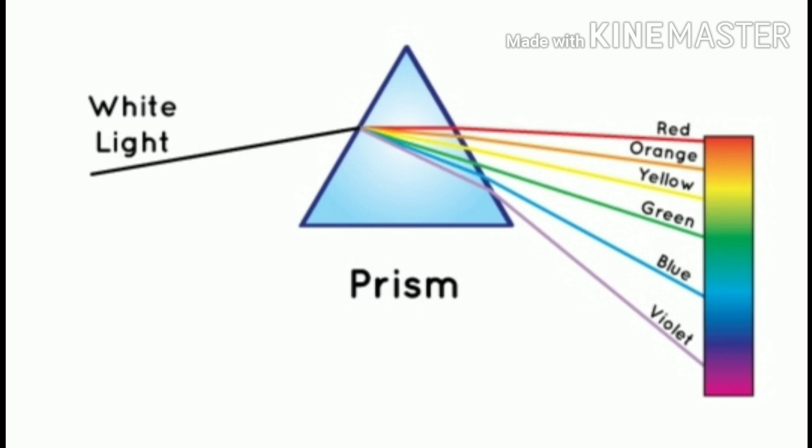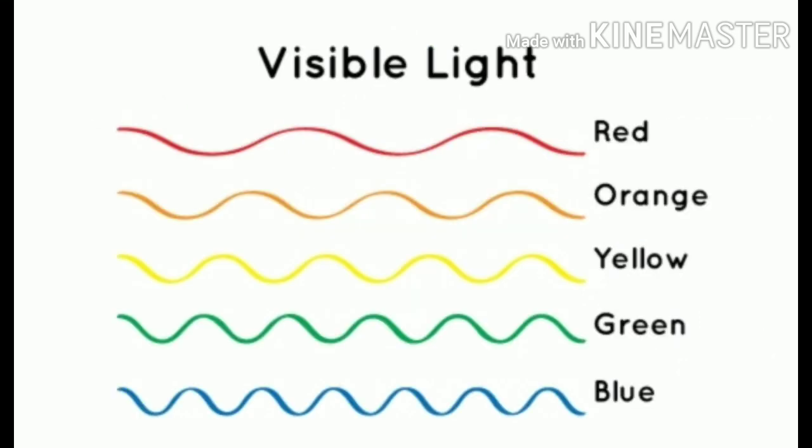Friends, now I am going to explain the rainbow prism. When white light shines through a prism, the light is separated into all its colors. A prism is a specially shaped crystal. This is called a rainbow prism.